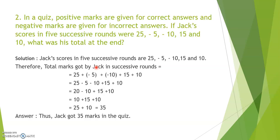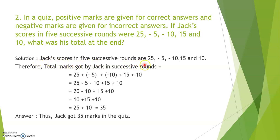Now coming to Question 2. In a quiz, positive marks are given for correct answers and negative marks are given for incorrect answers. Jack's scores in 5 successive rounds were 25, minus 5, minus 10, 15, and 10. So you have to write the solution: Jack's scores in 5 successive rounds are 25, minus 5, minus 10, 15, and 10.